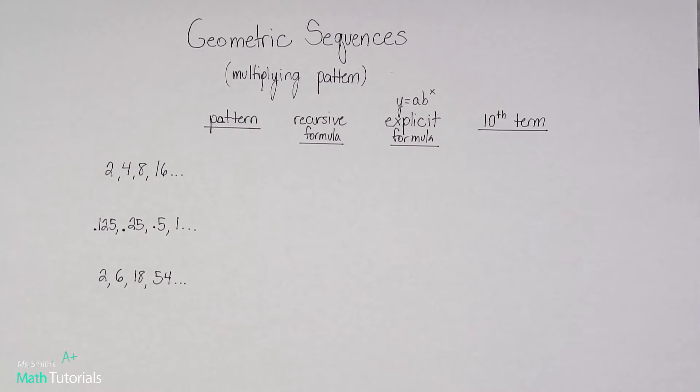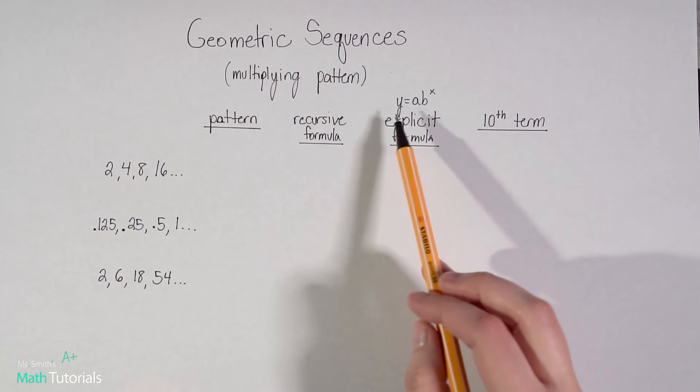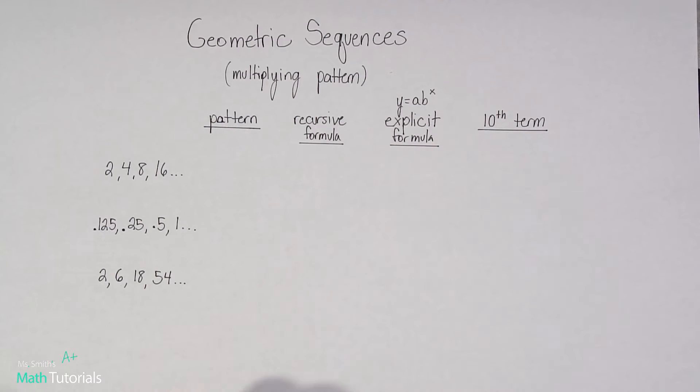In the previous video, we found the 25th term. You'll find that when we have a multiplying pattern, our numbers get very big, very quickly. Which is kind of the point behind an exponential formula. So this time, instead of finding such a large number, the 25th, we're going to go with the 10th.